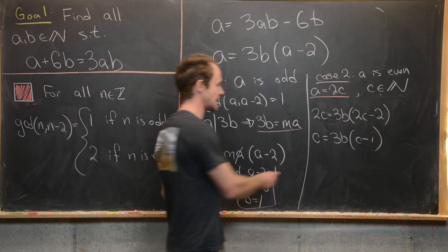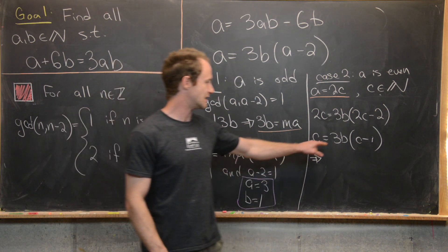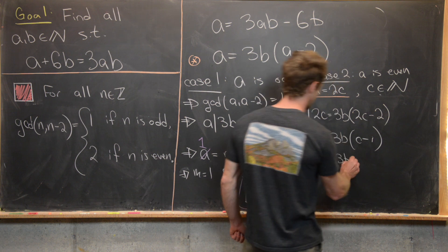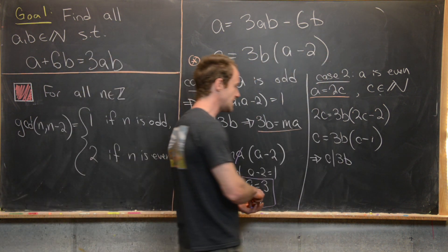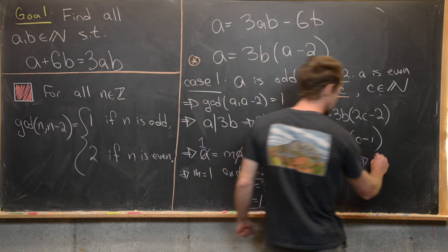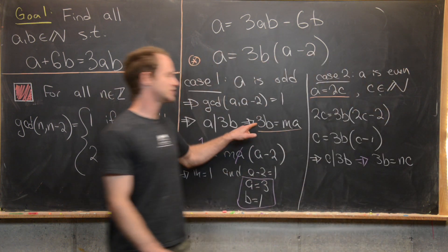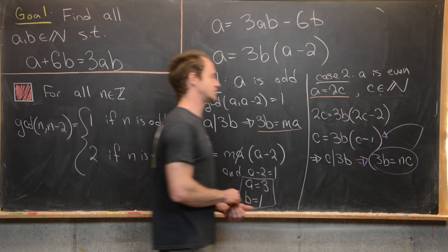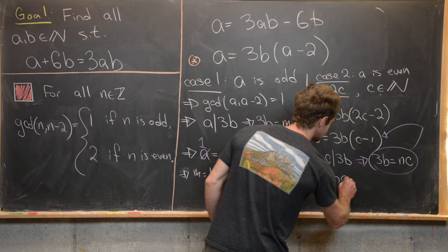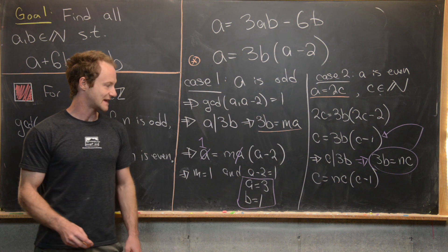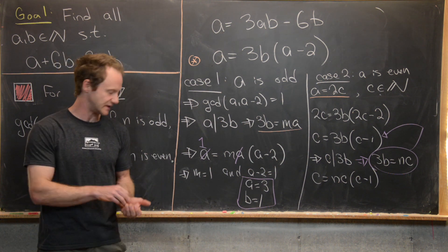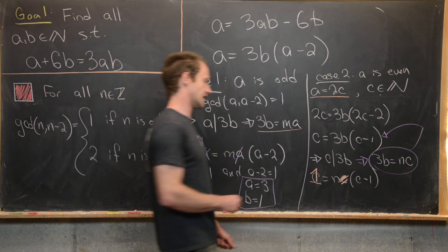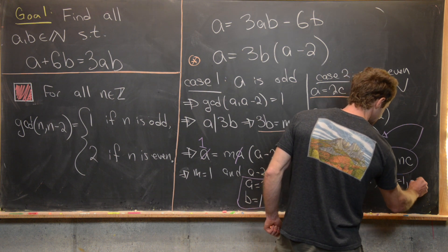Since C is coprime with C minus 1, C must divide 3B, so we can write 3B equals N times C. Plugging this back into the equation gives C equals N times C times (C minus 1). Canceling C from both sides leaves 1 equals N times (C minus 1). The only natural number solutions to that are N equals 1 and C equals 2.